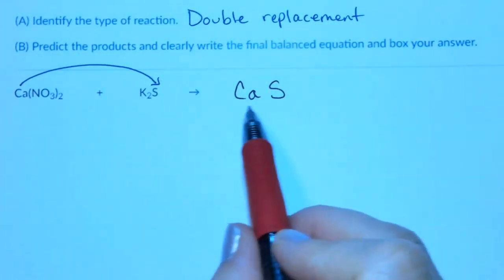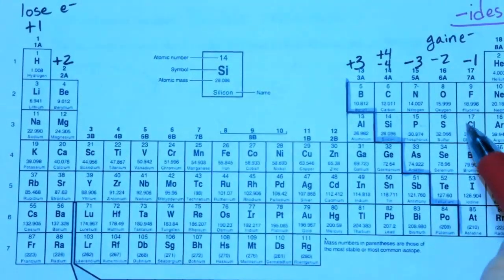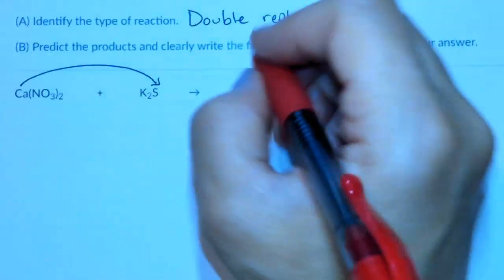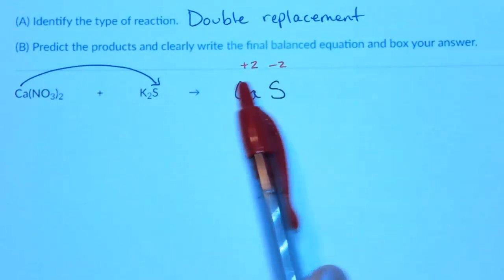I want to now balance the charges between calcium and sulfide. Calcium has a positive 2, sulfide has a negative 2, and plus 2 and minus 2 are going to balance or cancel with one another.